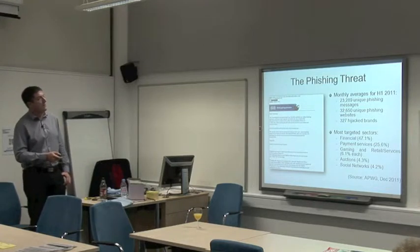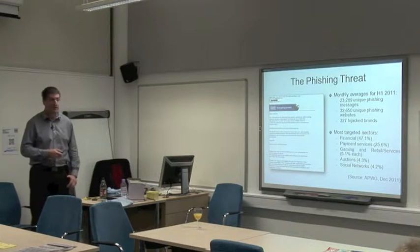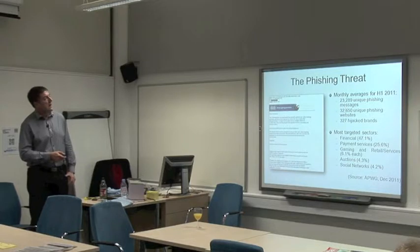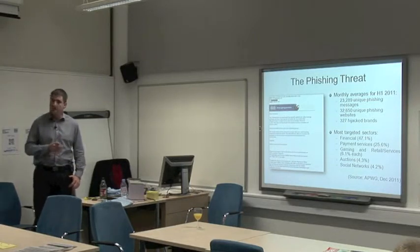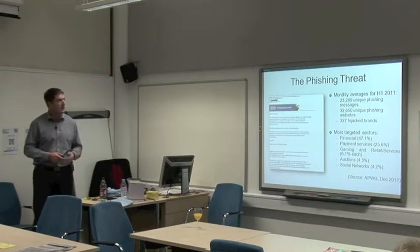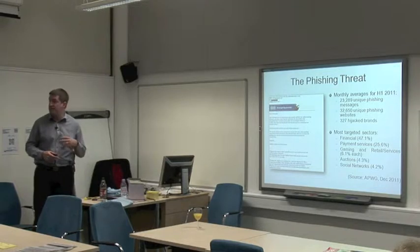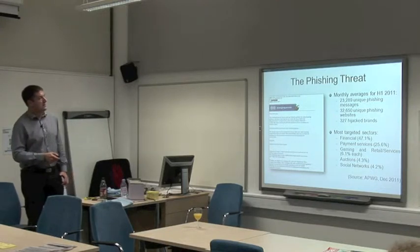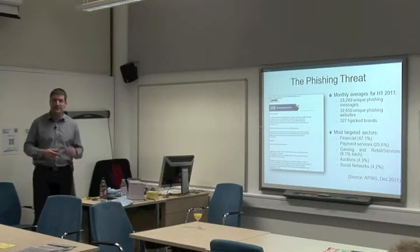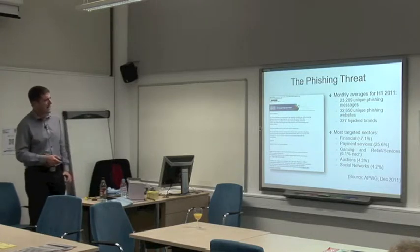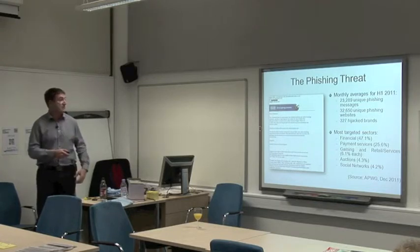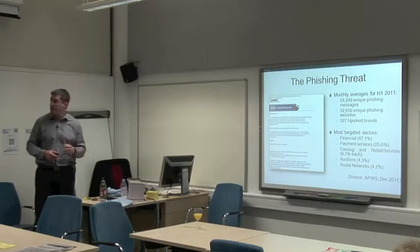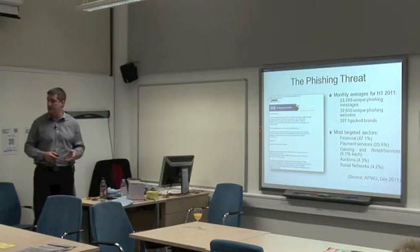To look at the scale of the problem, based on the first half of last year, this is information from APWG — the Anti-Phishing Working Group. There were just over 23,000 unique phishing messages per month in circulation during that period. This isn't the same thing being reported by different people — these are different phishing scams actively in operation. There were over 32,500 unique phishing sites and 327 on average hijacked brands per month — brands like Halifax, eBay, Amazon — that phishing messages were impersonating.